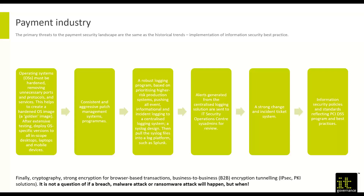A strong change and incident management ticketing system — whether ServiceNow, Remedy, or JIRA — the ability to document, identify, and assign tickets is essential. PCI has required this since at least version 2.0, and certainly in version 4.0. Finally, information security policies and standards reflecting the PCI DSS program and best practices. Any external auditor will ask: show me your information security policy, your standards, your change management policy, your incident management policy, and your business continuation program policy. All of those are essential from both a certification and a business best practices perspective.